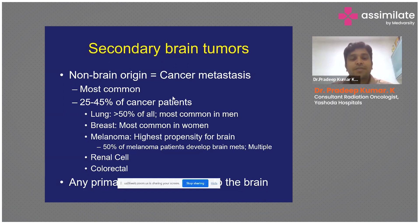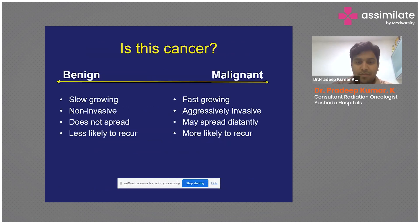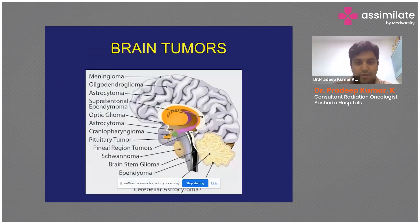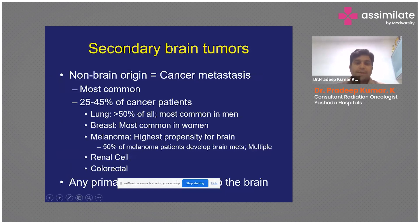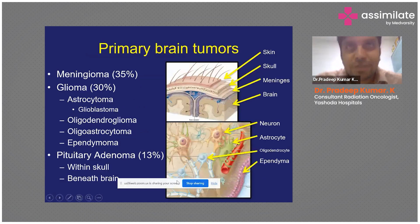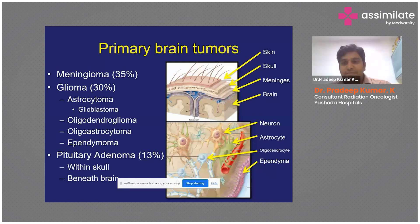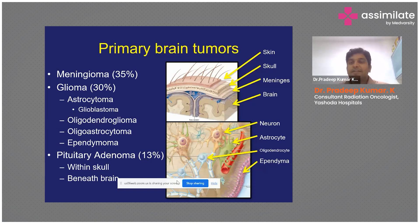A few other sources of secondary metastasis include renal and colorectal cancers. Coming back to primary brain tumors: our brain is inside the cranium, and the cranium and the brain are separated by thin layers called meninges. The meninges cover the brain, and above the meninges is the skull.